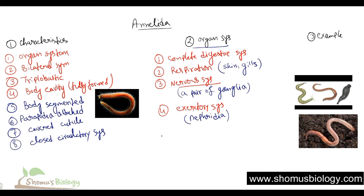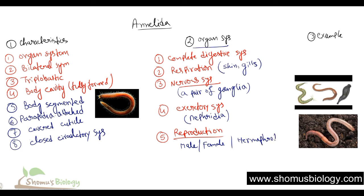The final and very important feature is their reproductive system. They can be hermaphrodites or have separate sexes. So they have three options: male, female as two different sexes, as well as hermaphrodite — where one individual can produce both egg and sperm. Their fertilization pattern is external, meaning fertilization takes place outside of the body.